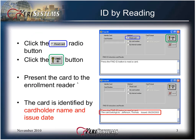To find the ID by reading the card, click the Read Card radio button. Click the Find ID button and present the card to the enrollment reader. The enrollment reader is the A reader on the master controller. The information about that card appears in the field at the bottom of the window. The card is identified by cardholder name and issue date.